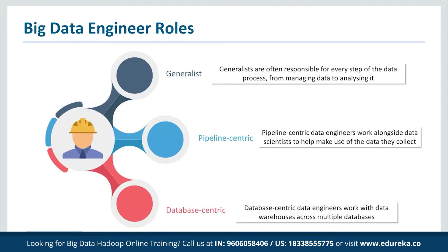There are typically three kinds of roles that a big data engineer has to assume. First, we have the generalist, typically found on small teams or in small companies, where data engineers wear many hats and are often responsible for each step of the data process, from managing data to analyzing it. Next, we have pipeline-centric data engineers, often found in mid-sized companies, who work alongside data scientists and need in-depth knowledge of distributed systems and computer science.